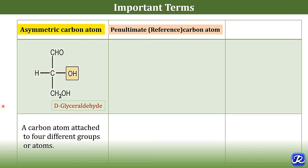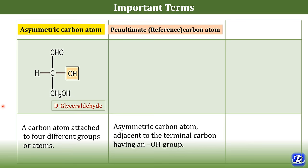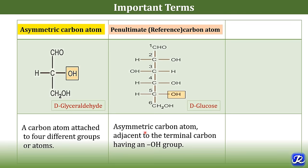The second term is penultimate or reference carbon atom. It is the asymmetric carbon atom which is adjacent to the terminal carbon having a hydroxyl group. This is a structure of glucose having six carbons — it is a hexose sugar and the carbon atoms are numbered one, two, three, four, five, and six. So this fifth carbon atom, which is adjacent to the terminal carbon number six, is an asymmetric carbon atom and is called the reference carbon atom because it is adjacent to the terminal carbon having a hydroxyl group.